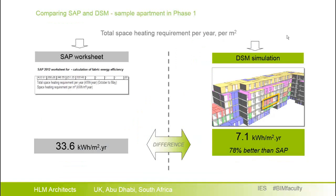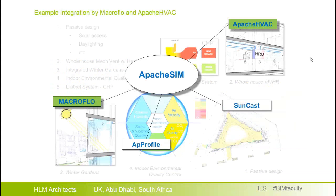We are using dynamic simulation to support, design, and assess the building. As you can see, there is a substantial difference between the SAP worksheet output and the dynamic simulation output — the DSM output is 78% better than the SAP in this direct comparison. There are several factors that contribute to this, and we are going to highlight two. We will see in detail two IES modules: Microflow for the winter gardens, and Apache HVAC for the mechanical ventilation system.